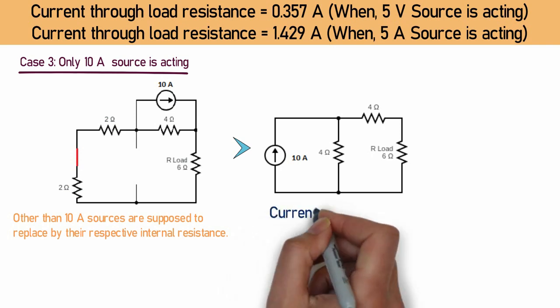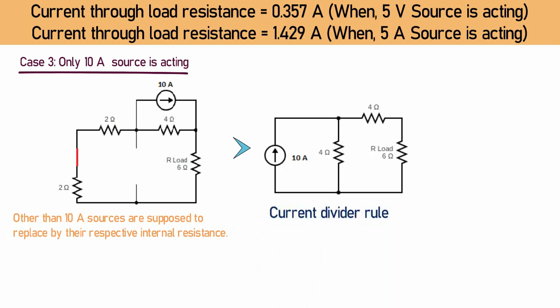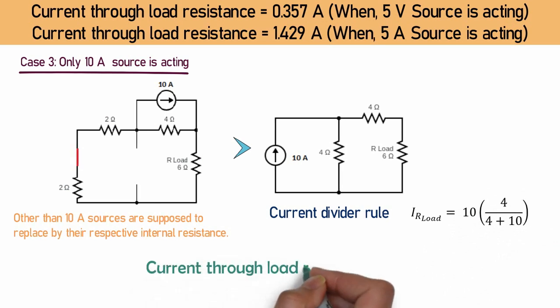By using current divider rule, we can find current and voltage through load resistance. And in this case, it is 2.86A.